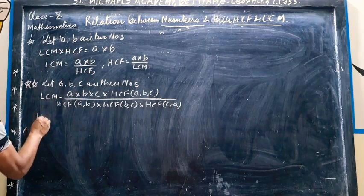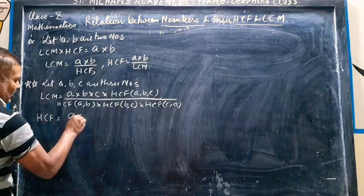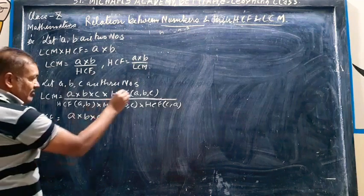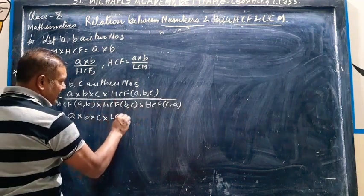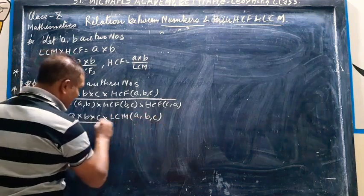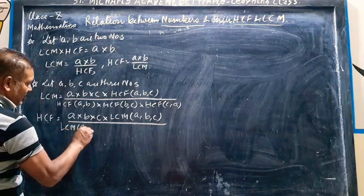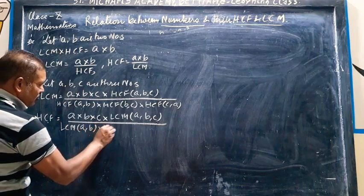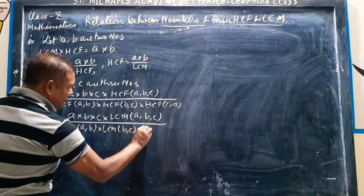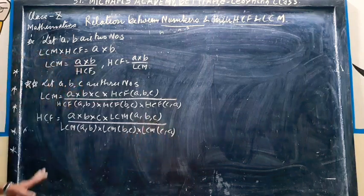And for the HCF, that is equal to product of the three numbers into, when you have to find HCF, the same condition you have to apply for LCM. LCM of A, B and C upon LCM of A into B into LCM of B into C into LCM of C into A. That is it.